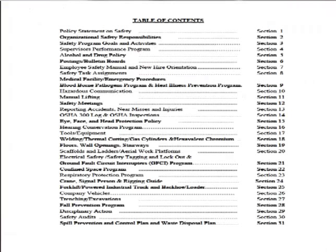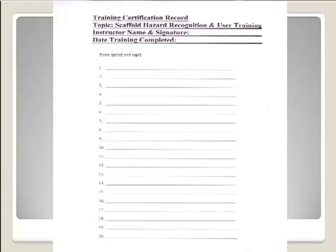We were able to get citations deleted or reduced by showing an effective safety program. The first thing is an effective written safety program — including sections on scaffolds, ladders, and aerial work platforms, with everyone involved in those activities properly trained. When we talk about training, OSHA usually looks for a training certification record — it can be a piece of paper or a pocket card with the topic (e.g., scaffold hazard recognition and user training), the instructor's name and signature, the date training was completed, and the name and signature of the person trained.